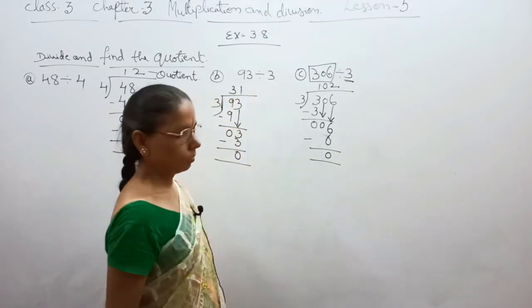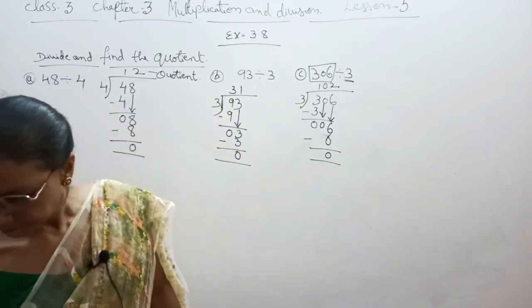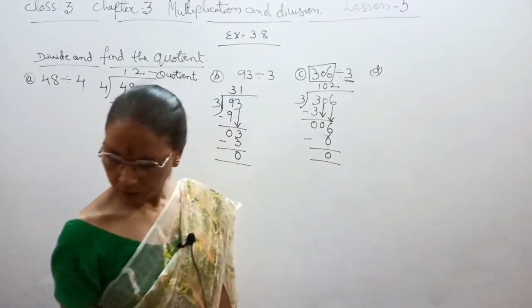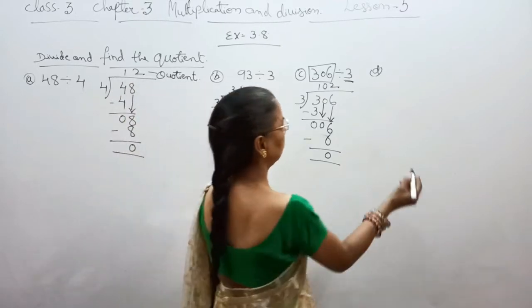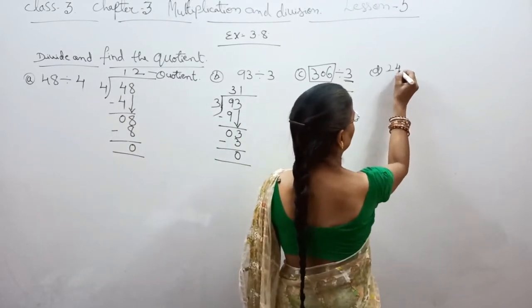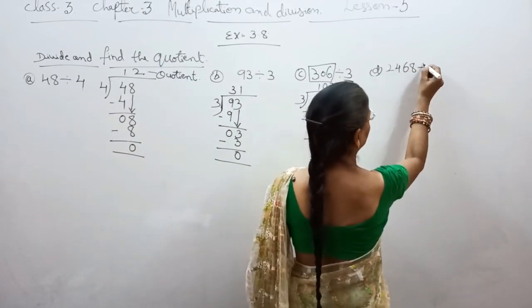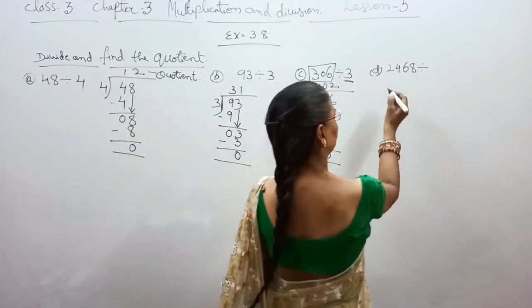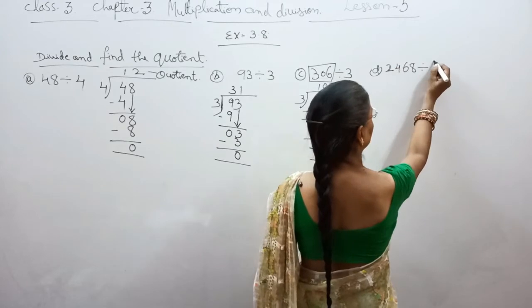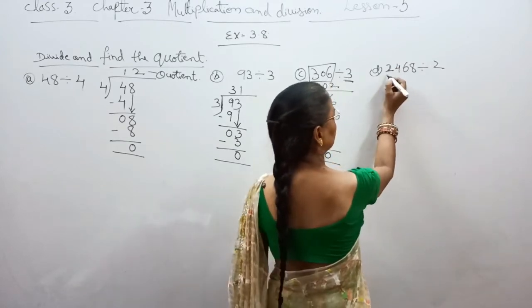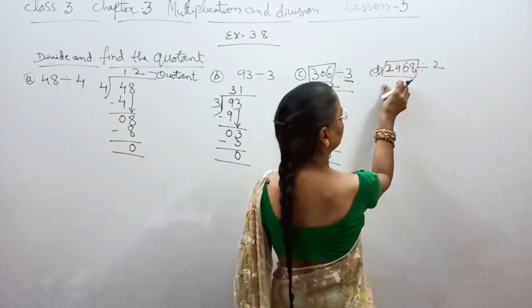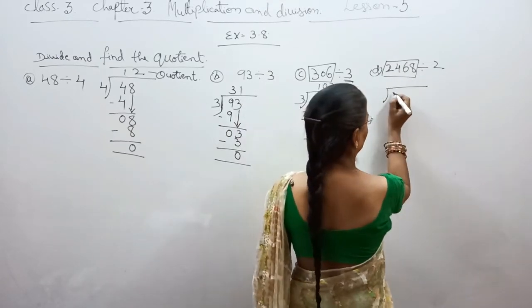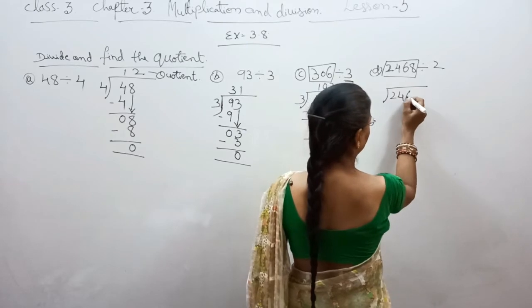Now the fourth question is 2468 divided by 2. This is a 4-digit number and we have to divide it by 2 using the long division method.